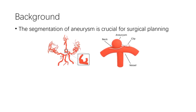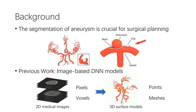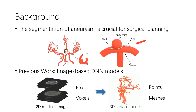Currently, the primary treatment method of intracranial aneurysm is clipping the neck of an aneurysm to prevent it from rupturing. The segmentation of aneurysm is crucial for surgical planning. However, in previous work, the study of 2D MRA images confines the selection to 3D neural networks based on pixels and voxels, which also omits the information from manifolds. Therefore, we introduce an open-access 3D intracranial aneurysm data set that makes the application of points-based and mesh-based models available.